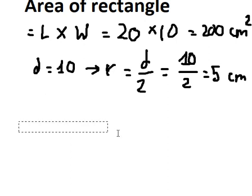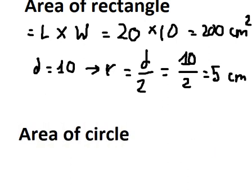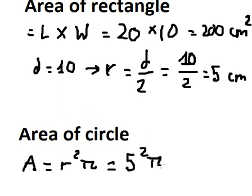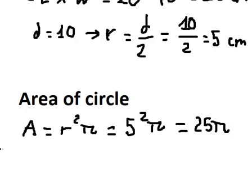So the area of the circle should be r squared π. We have 5, so you got 25π. But we have two circles, so the total in here...